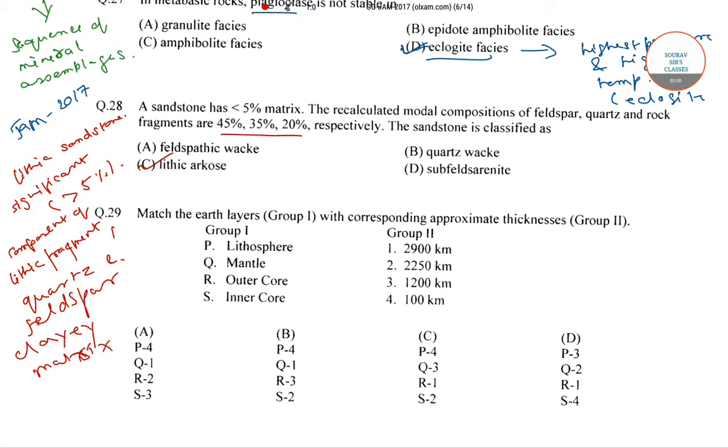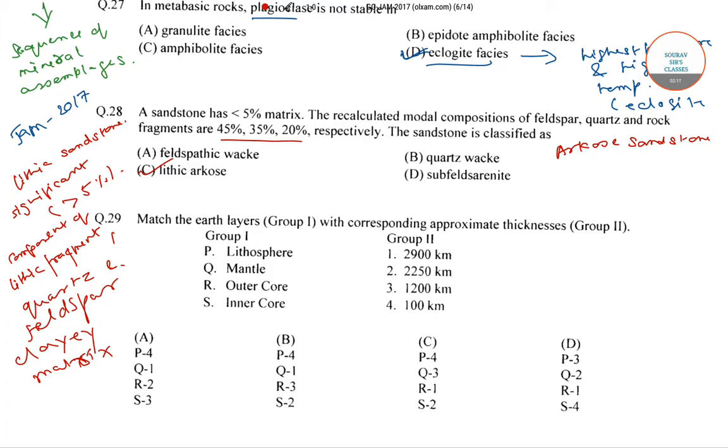And arkose sandstone, they are rich in feldspar. They contain at least 25% of feldspar. So with these two, we can say that the sandstone is classified as lithic arkose.